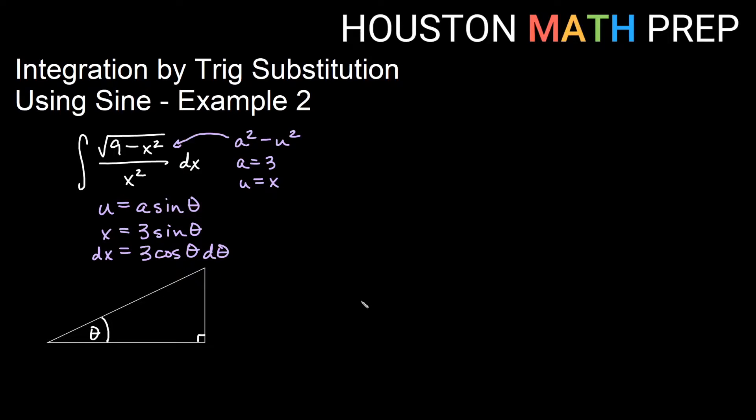First we'll build our right triangle. This statement right here, my original substitution, if I get it in terms of sine theta equals, sine theta is going to be x over 3. If I divide both sides by 3, and remember that sine is the opposite over the hypotenuse in a right triangle. So my x will be over here, and my 3 will be the hypotenuse here.